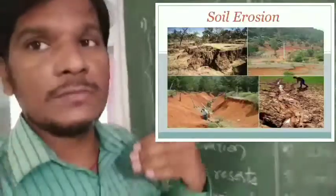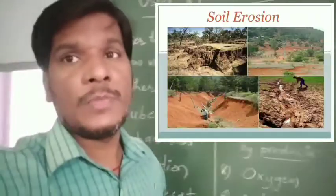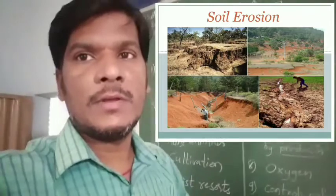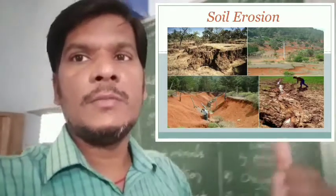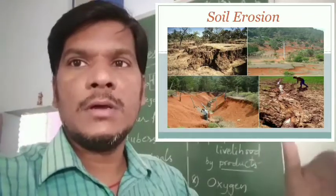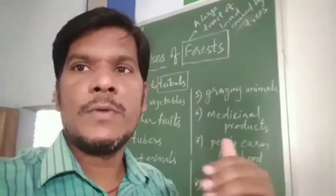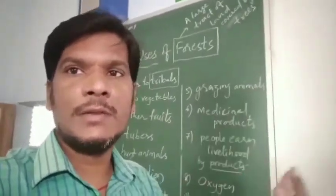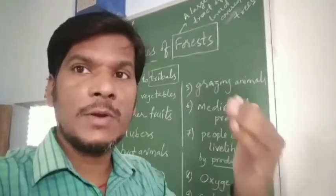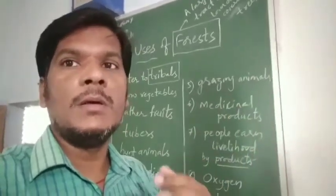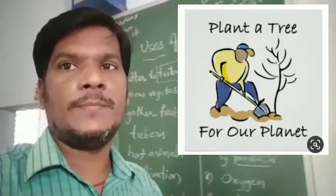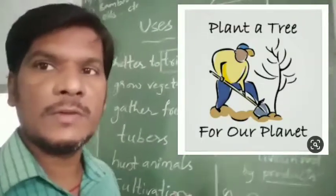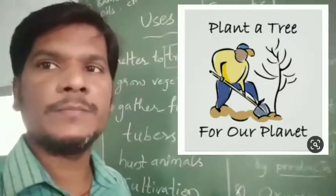Soil erosion will be stopped by forests. Soil is otherwise carried away with the water flow from one area to another, causing soil loss. Forests prevent this soil erosion. These are the uses of a forest.